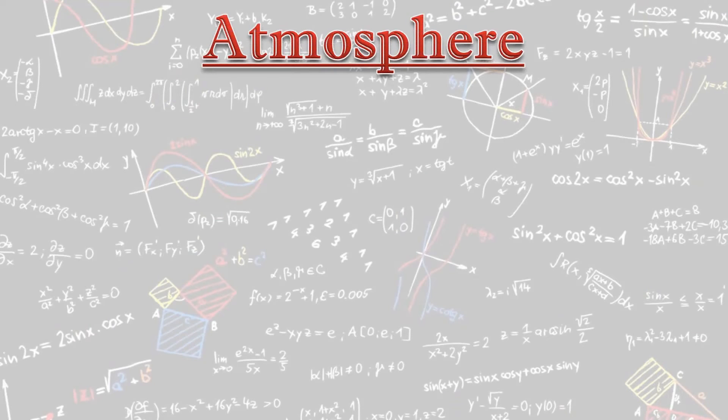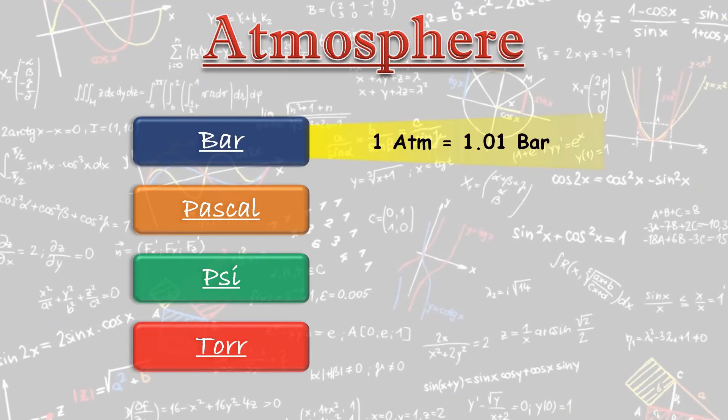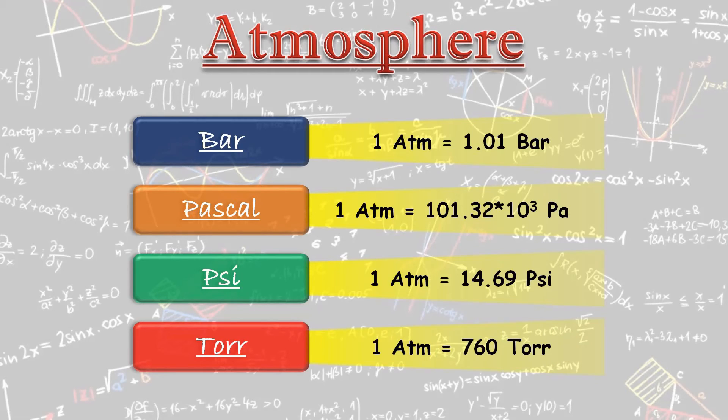The last one is for atmosphere. 1 atmosphere is equal to 1.01 bar. 1 atmosphere is equal to 10.32 × 10^3 Pascal. 1 atmosphere is equal to 14.69 PSI. And 1 atmosphere is equal to 760 Torr.